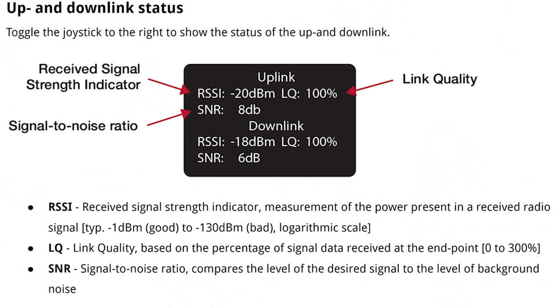It's also why control links like Crossfire report signal-to-noise ratio (SNR) in addition to RSSI signal strength and LQ link quality. The SNR lets you see how your signal is doing relative to the ambient noise level, not just relative to some theoretical maximum. Unfortunately, I don't think ExpressLRS reports SNR, and I'm not sure whether Ghost does. But if you have access to SNR, that's also worth looking at — and that's maybe a topic for another video.